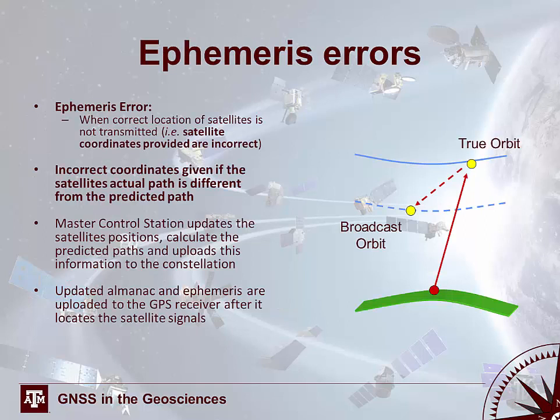The ephemeris error occurs when the correct location of a satellite is not transmitted — the provided coordinates for a given satellite are incorrect. If these incorrect coordinates are taken as true, you will calculate an incorrect location. The master control station is responsible for monitoring satellite orbits, calculating a predicted path, and uploading that information to the constellation, updating the navigation message. That updated almanac and ephemeris are uploaded to the GPS receiver via the navigation message.